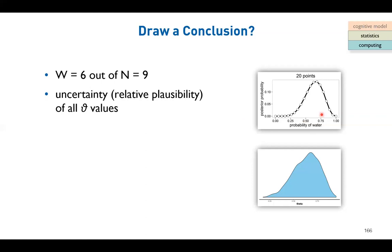There is uncertainty around the parameter space. Every parameter from 0 to 1 - let's say we have 1,000 - every parameter is possible to generate this data, but the relative possibility is different. Some have a lower relative possibility, some have a higher relative possibility. This is the uncertainty that is only guaranteed by using a Bayesian approach.